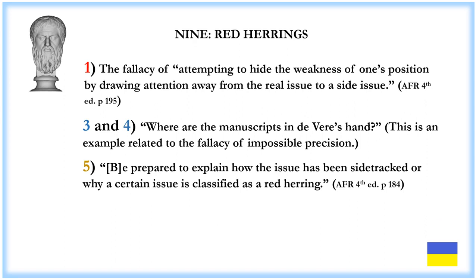Fallacy 9: Red Herrings. This is the fallacy of attempting to hide the weakness of one's position by drawing attention away from the real issue to a side issue. Since 1920, the Stratford argument has been: where are the manuscripts in Edward de Vere's hand? This is an example related to the fallacy of impossible precision — moving goalposts further and further back in an argument until it is almost impossible to counter. As Damer says, be prepared to explain how the issue has been sidetracked or why a certain issue is classified as a red herring.